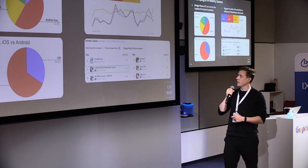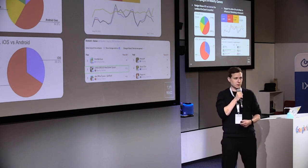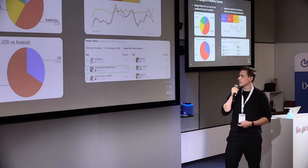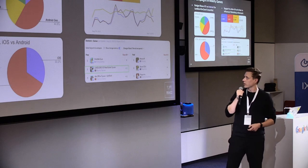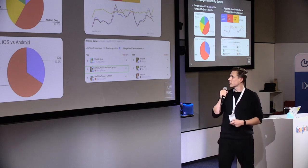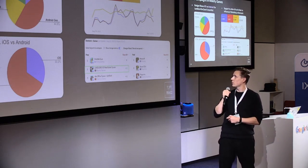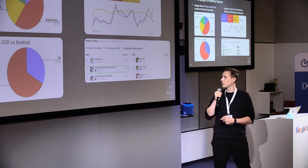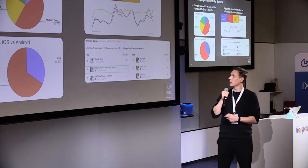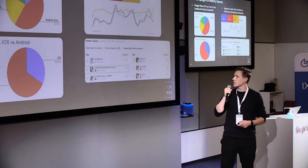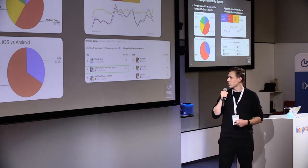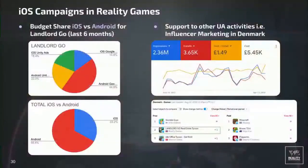Here is the budget share of iOS versus Android at Reality Games. You can see we do quite a lot of iOS campaigns, but still the majority of our traffic comes from Android. Here is Android Google Ads, here Android Unity Ads, iOS, and iOS Google — so we are basically spending much more money on Android than iOS.